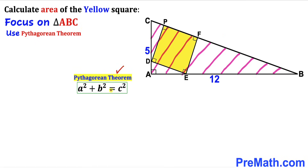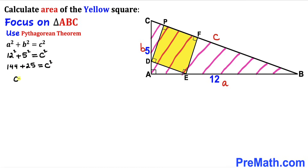Here's our Pythagorean theorem: A² + B² = C². Let me go ahead and label this longest side as C, this side A, and this side B. Filling in the blanks: A is 12, so this becomes 12² + 5² = C². Therefore C² equals 169. Taking the square root on both sides, C turns out to be positive 13. So our hypotenuse BC turns out to be 13 units.